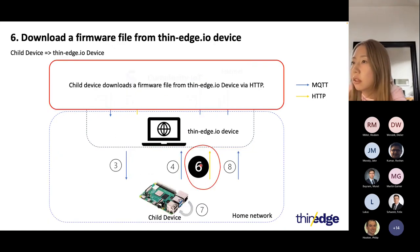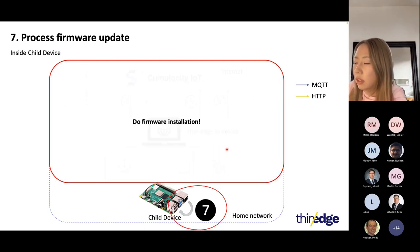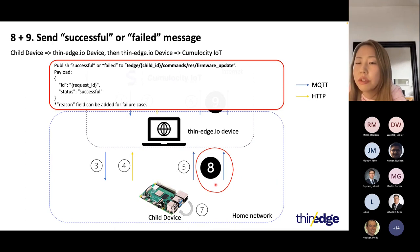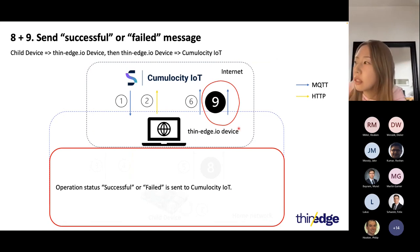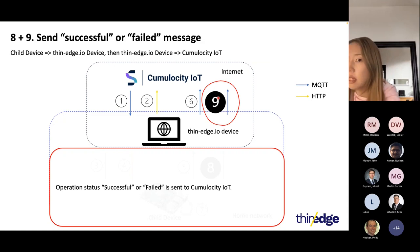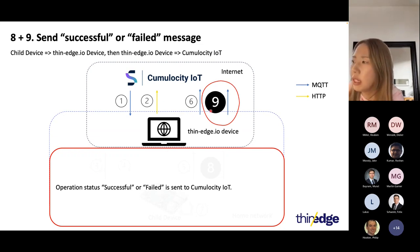Step six: the child device downloads the firmware file from the thin-edge device. Step seven: the child device performs the firmware installation. After the firmware installation finishes, step eight: the child device reports the operation status to the thin-edge device — if successful, the payload is very simple; if failed, you can also add a reason field explaining why it failed. Step nine: the thin-edge device converts the operation status update to the Cumulocity Smartrest format, and Cumulocity's operation status changes to either successful or failed. If any error occurs in earlier steps, the thin-edge device sends an operation failure to Cumulocity IoT with a corresponding reason.